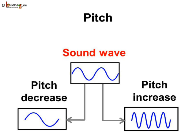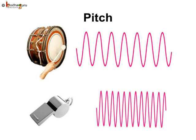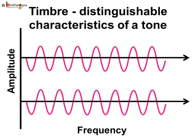If the frequency of vibration is higher, we say that the sound is shrill and has a higher pitch. If the frequency of vibration is lower, we say that the sound has a lower pitch or is less shrill. Now we know, sound may be loud or feeble and even pitch may vary — i.e., high-pitched or low-pitched. But how are we able to distinguish sounds which have the same pitch and loudness?